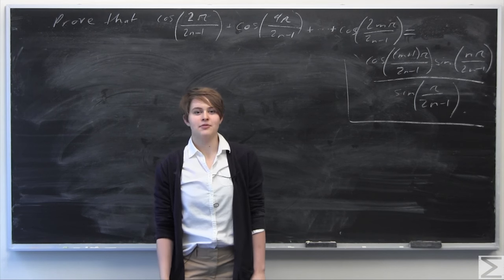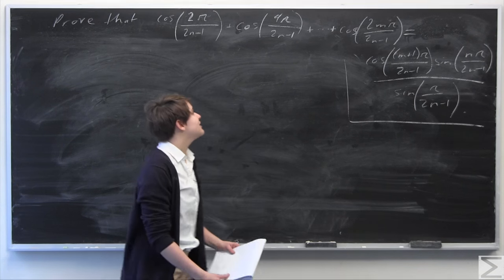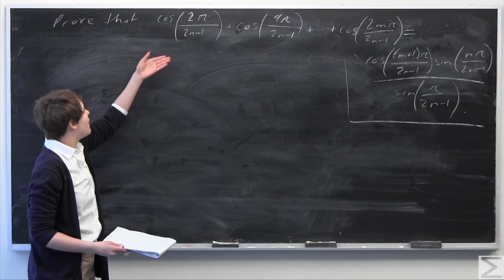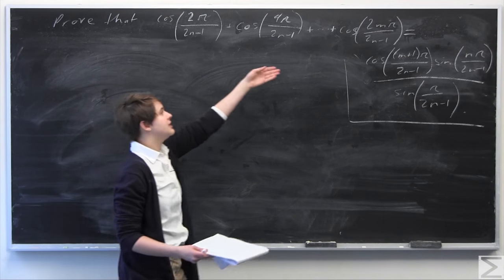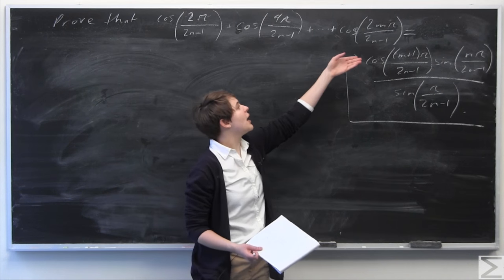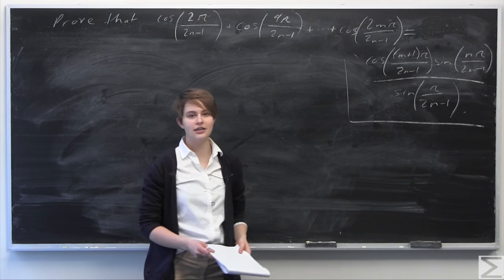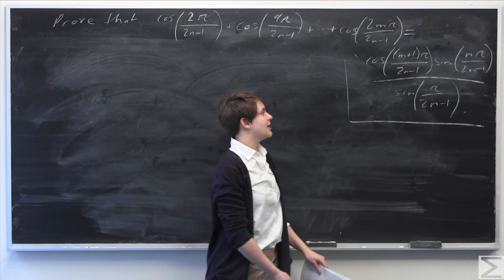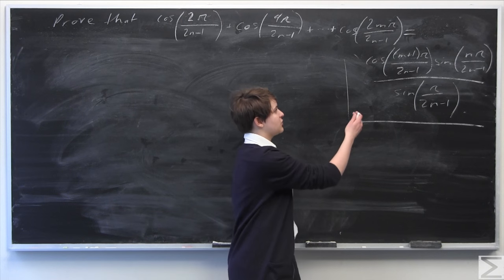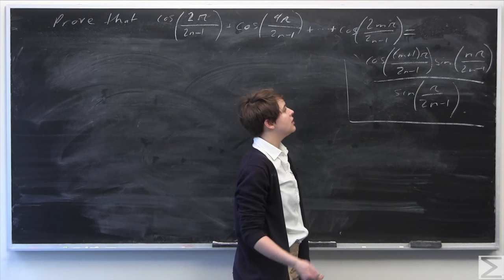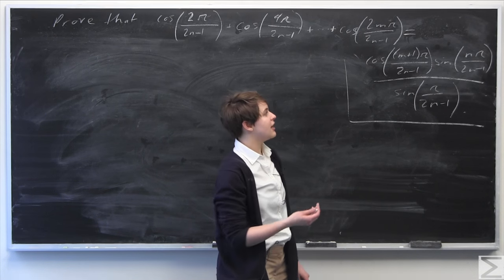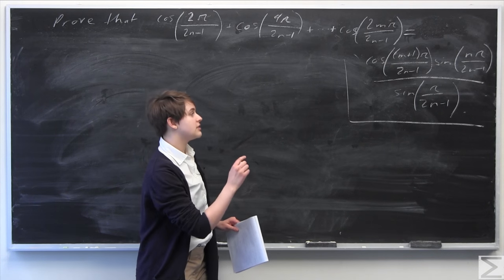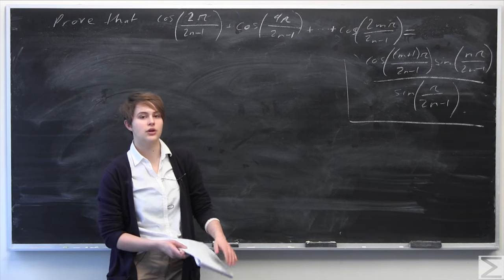This week's Advanced Problem of the Week asks you to prove the following statement: that the sum of the cosines of 2m pi over 2n minus 1 is equal to the expression on the right-hand side — cosine of quantity n plus 1 times pi over 2n minus 1, times sine of n pi over 2n minus 1, all over sine of pi over 2n minus 1.